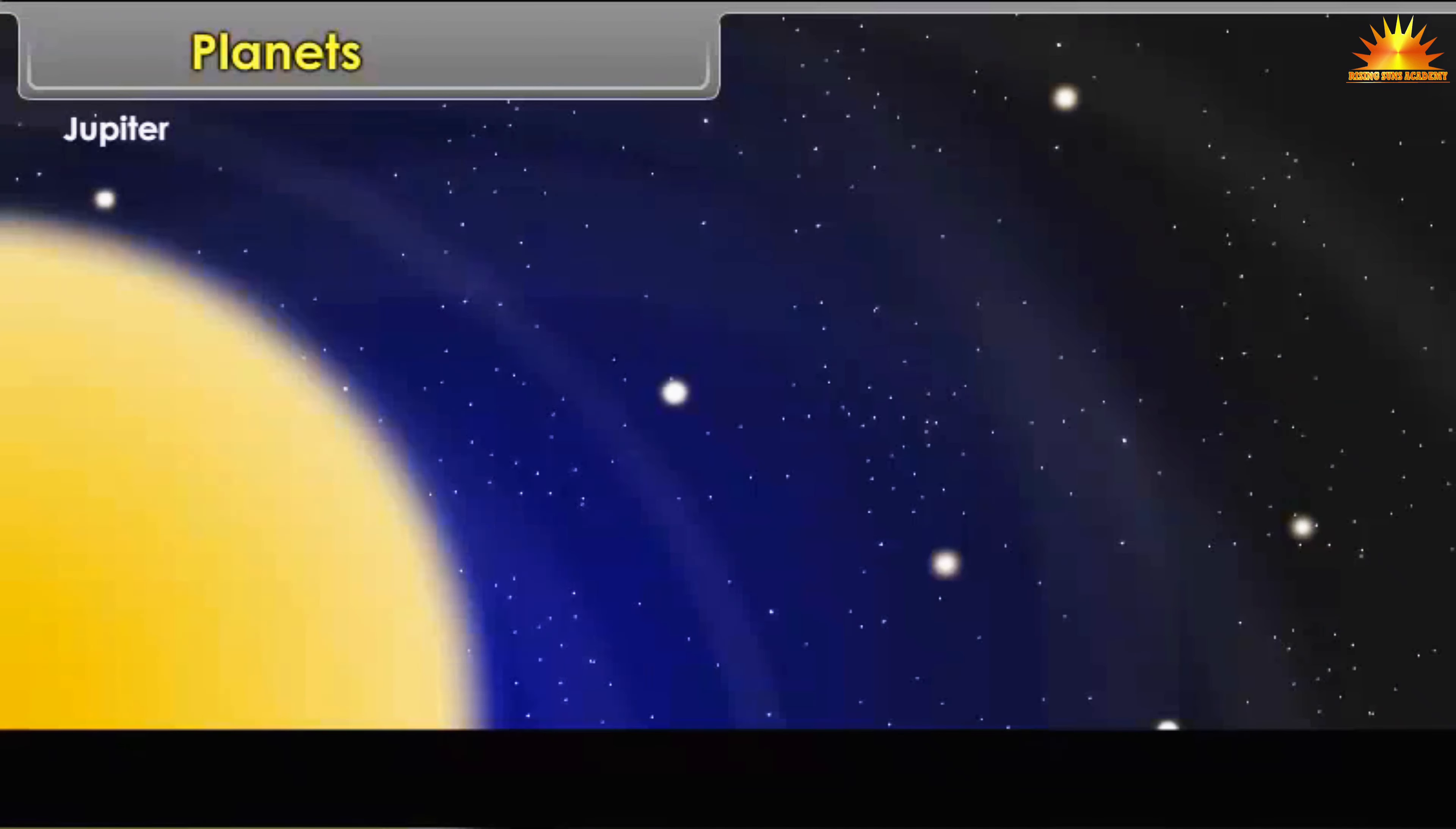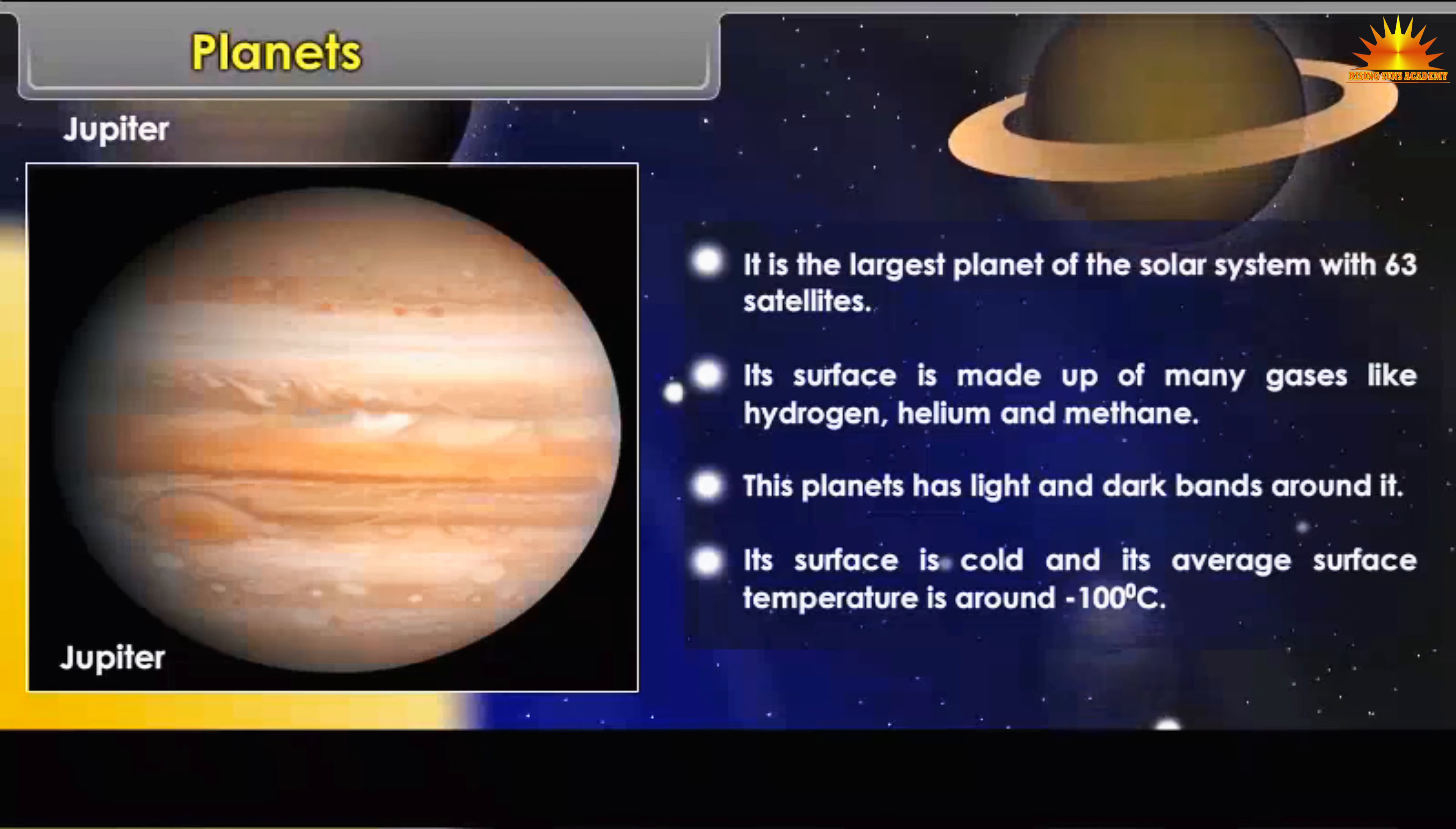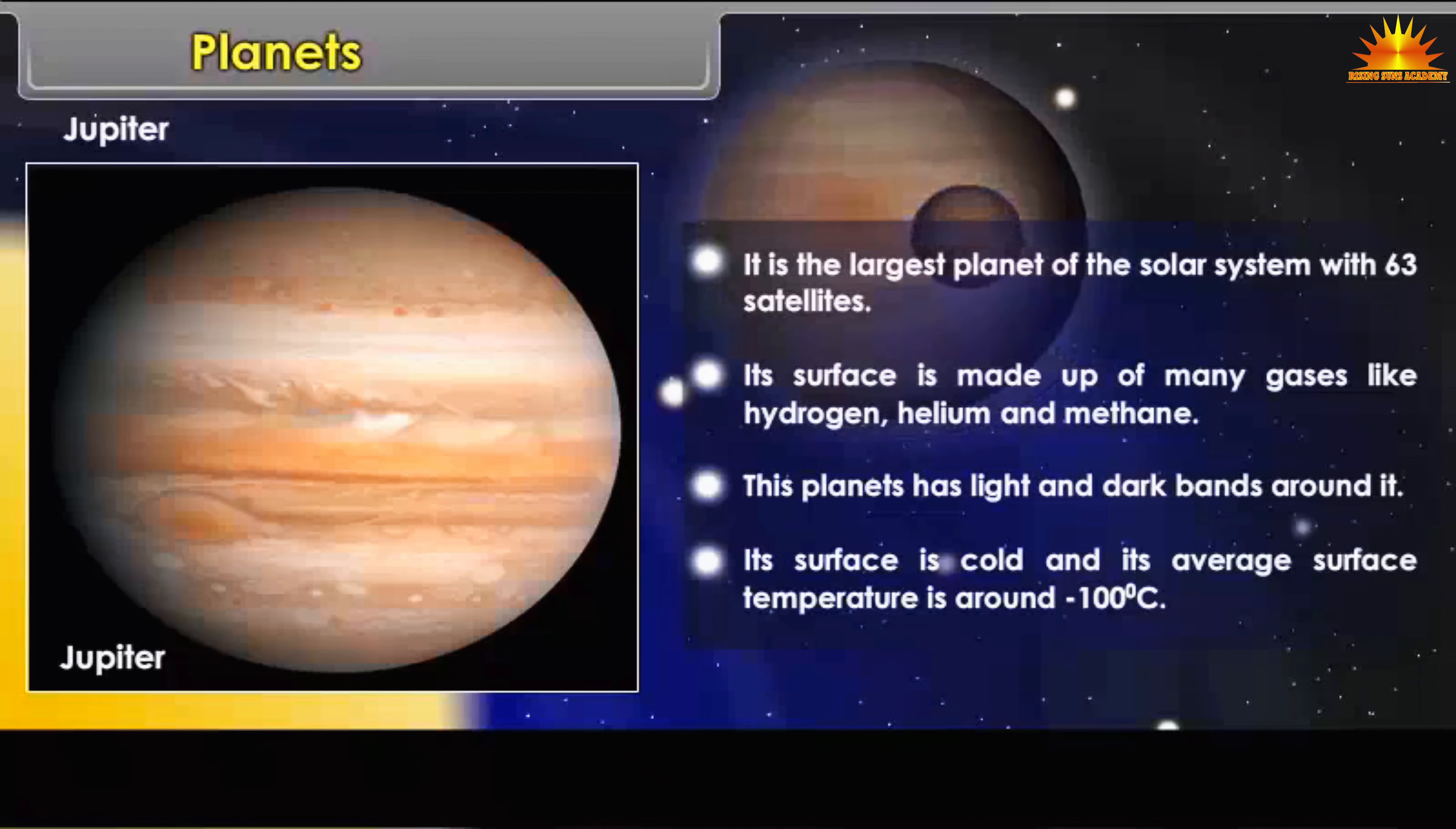Jupiter: Its surface is made up of many gases like hydrogen, helium and methane. This planet has light and dark bands around it. Its surface is cold and its average surface temperature is around minus 100 degrees Celsius.